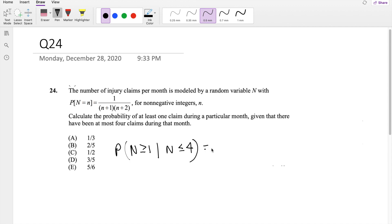So then by the conditional probability formula, we can break this down into the probability that n is between one and four divided by the probability that n is less than four.